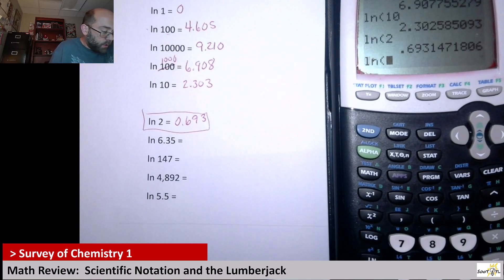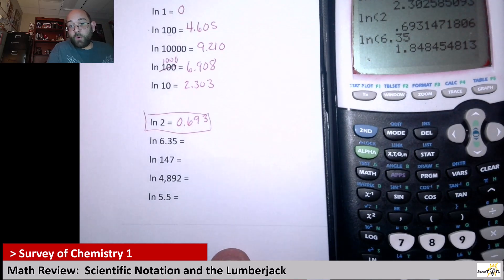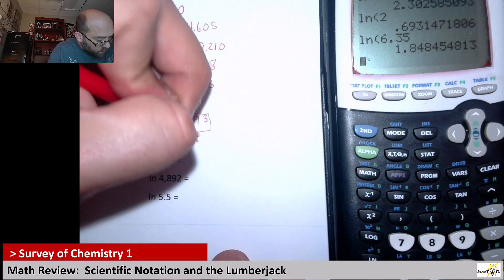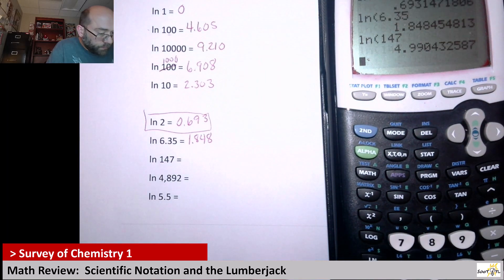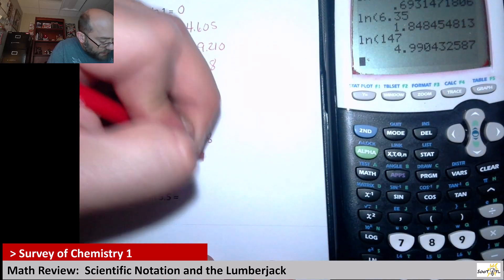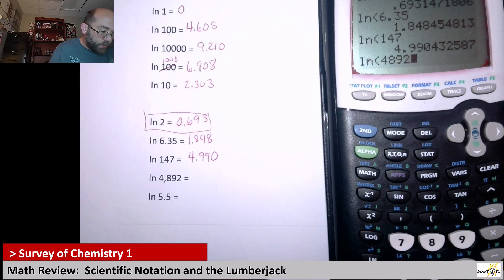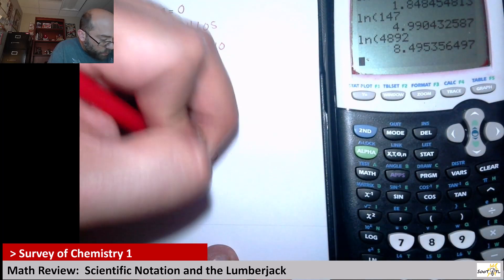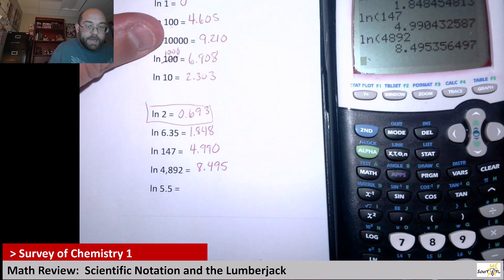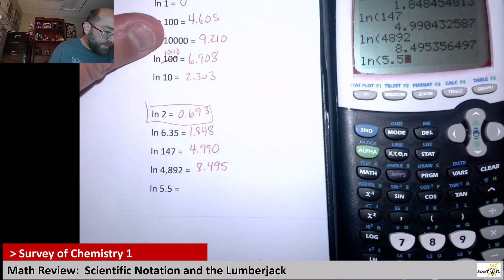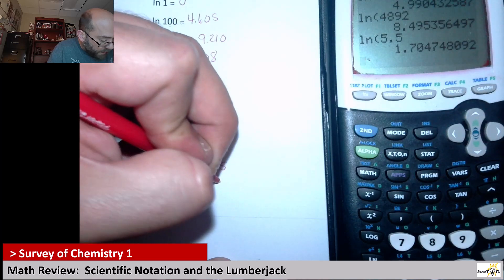Natural log of 6.35, 1.848. Natural log of 147 is 4.990 and natural log of 4892 is going to be 8.495. And lastly, natural log of 5.5 is going to be 1.705.